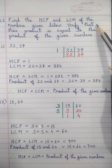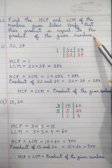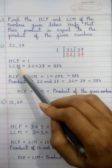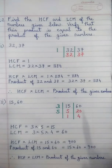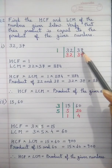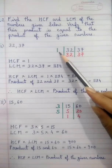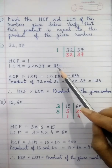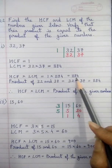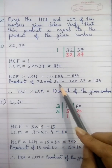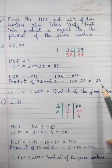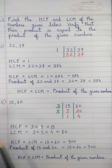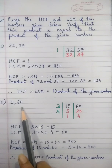Question 2: find the HCF and LCM of the numbers and verify that their product equals the product of the given numbers. For 32 and 37: we find the factors — there are no common prime factors, so HCF is 1. LCM = 32 into 37 = 1184. Product of 32 and 37 is also 1184, and HCF into LCM = 1 into 1184 = 1184. This proves HCF × LCM = product of the given numbers.